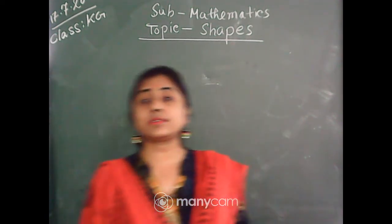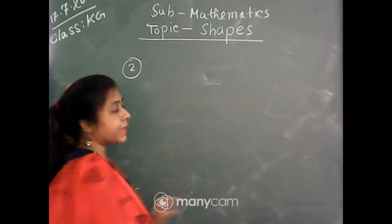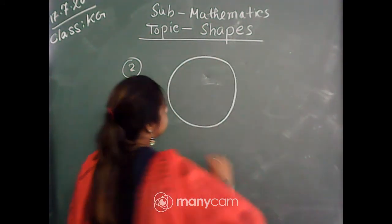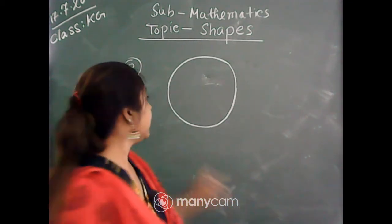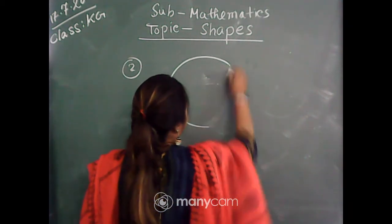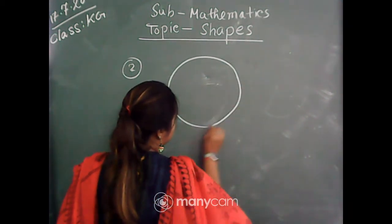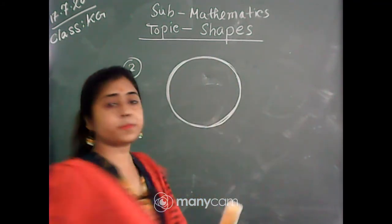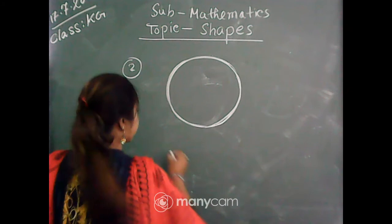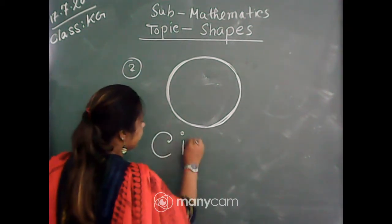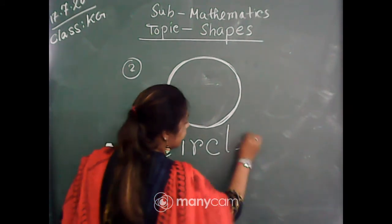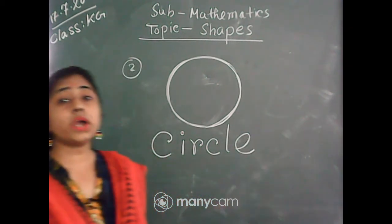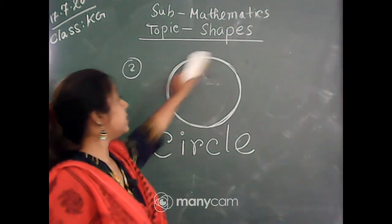So our next shape is number 2, that is circle. This is circle, this is circle — it is a round shape. It is circle, and the spelling is important: C-I-R-C-L-E, circle. C-I-R-C-L-E. You should draw it by yourself.